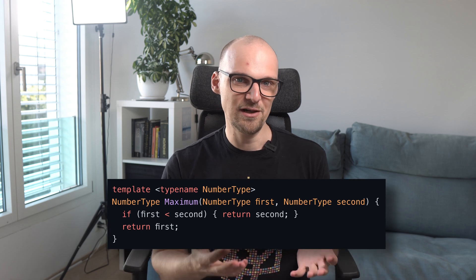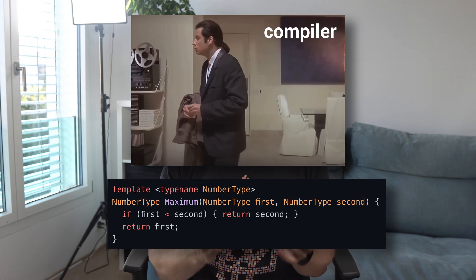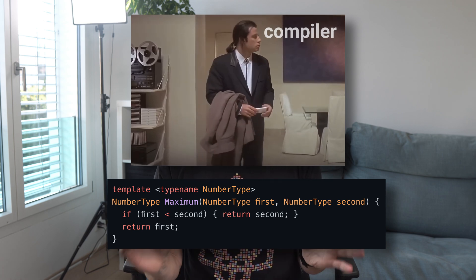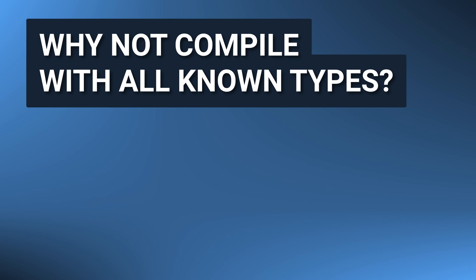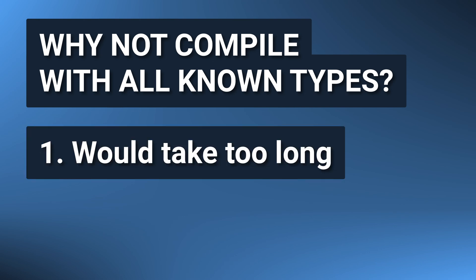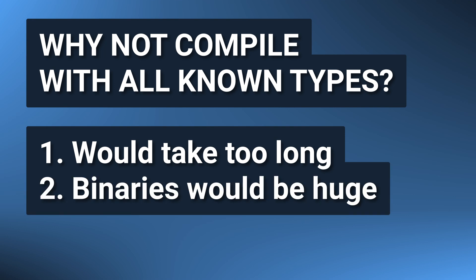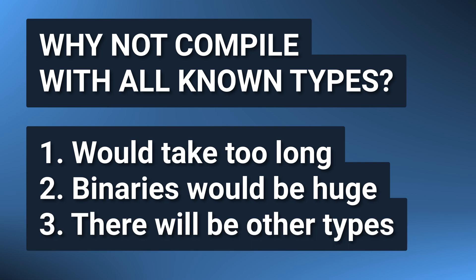Only those specializations are generated that are actually used. If we didn't use the maximum function, it would not have been compiled at all. If we think about it, it becomes clear why this is so. Looking at the maximum function template itself in isolation, the compiler doesn't know which types it will be used with — technically it could be any type we want. So the compiler cannot and should not compile the code for all the types it knows about. It would take ages, it would need to compile a lot of code, the binary size would be huge, and it might still not be enough, as maybe we will give it out as a library and just don't know which types it might be used with.